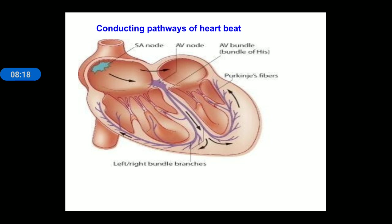The wave of contraction message reaches the AV node — you can see it in the labeling. The AV node receives the wave of contraction, and through the Bundle of His — which is a network of fibers — the contraction message spreads into the ventricles, causing the ventricles to contract. This is how the wave of contraction and conduction of the heart works.